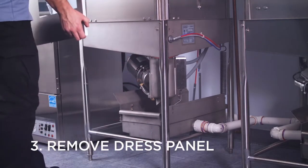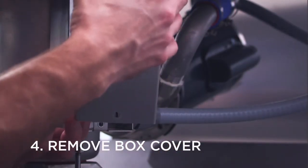To access the drain solenoid, remove the front dress panel. Locate the drain solenoid box and remove the box cover.